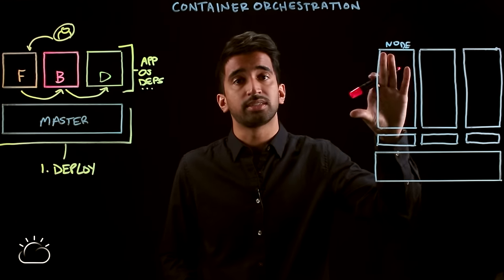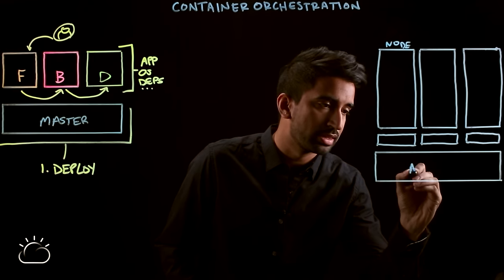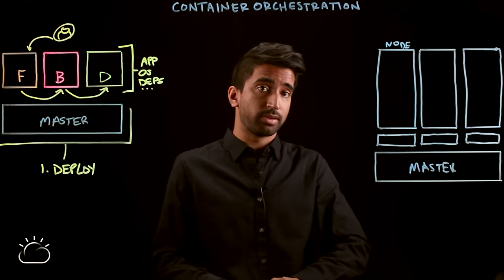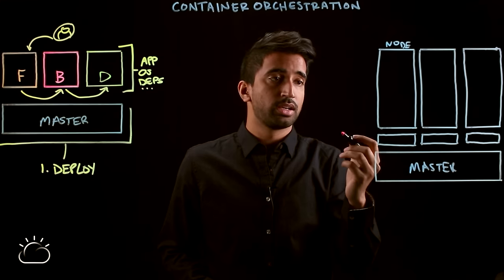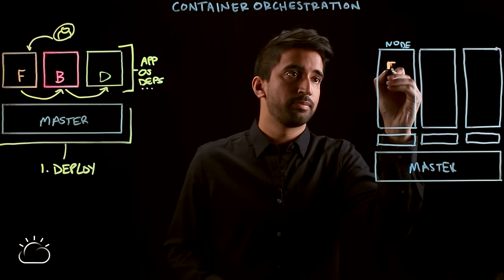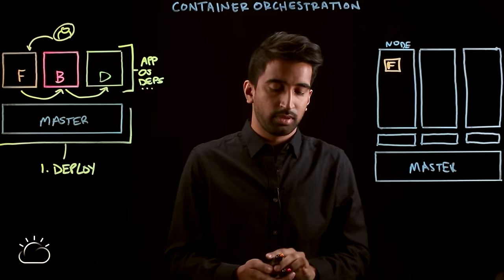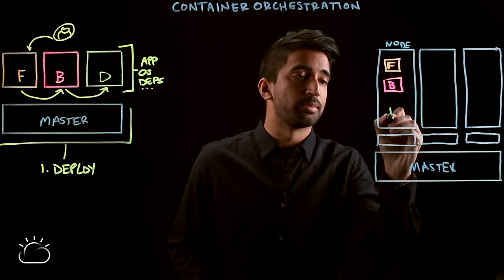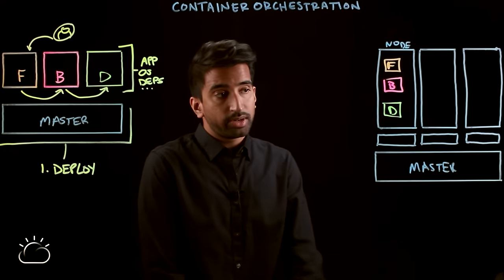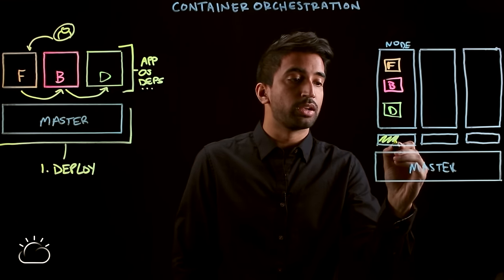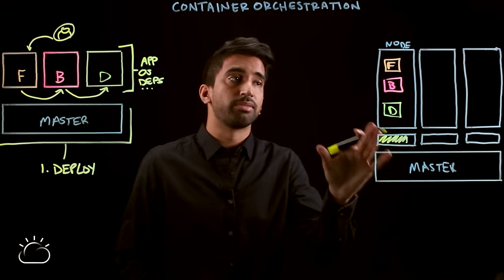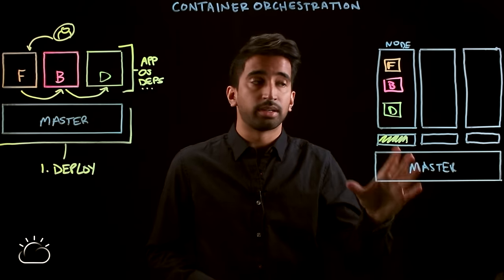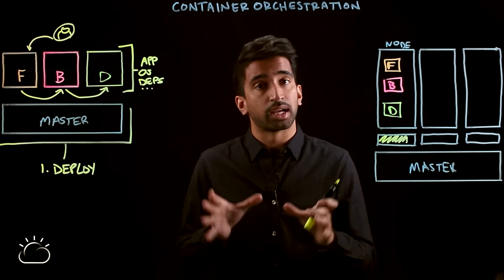Let's say we start with a single node — here we've got the master. On that single node, we'll deploy three different microservices, one instance each: the front-end, the back-end, as well as the database access service. Let's assume we've consumed a good bit of the compute resources available on that worker node. So we realize we need to add additional worker nodes to our master and start scheduling out and scaling our application.